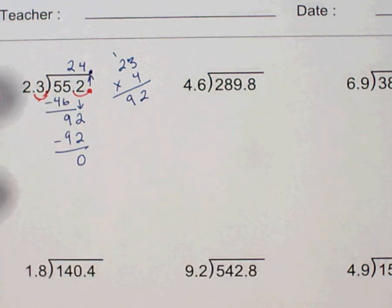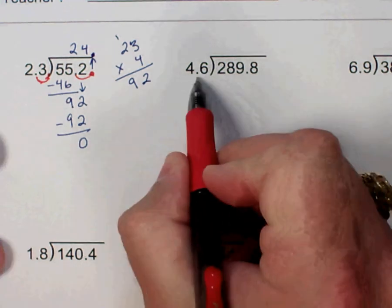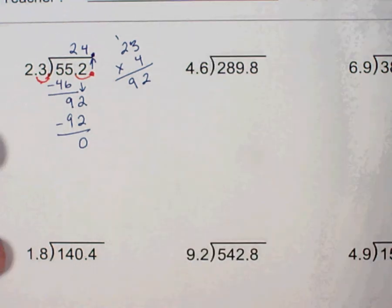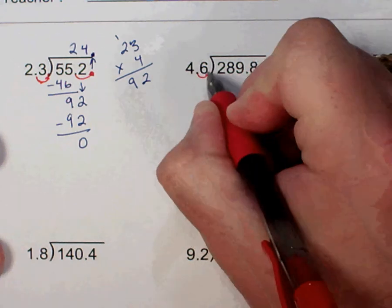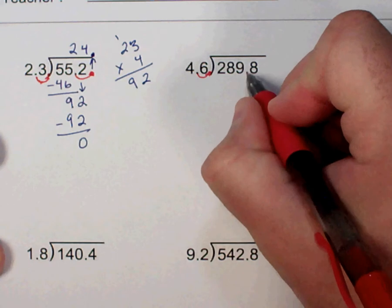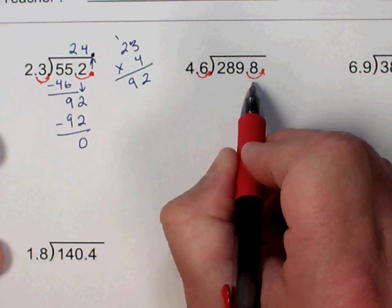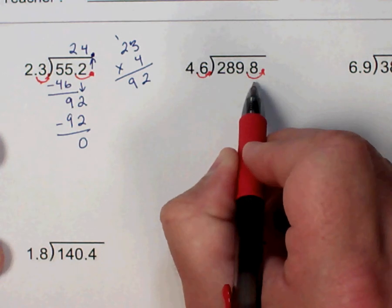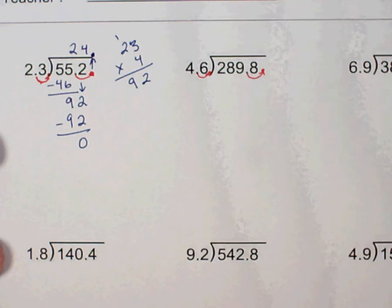Let's go ahead and do the next one. So again, I've got just one decimal place here in my divisor, the number I'm dividing by that I have to deal with. So I'm just going to move it over one place. And however many places I move it over here, I have to also move it here. So one place here, one place here. And so my new problem is 2,898 divided by 46.